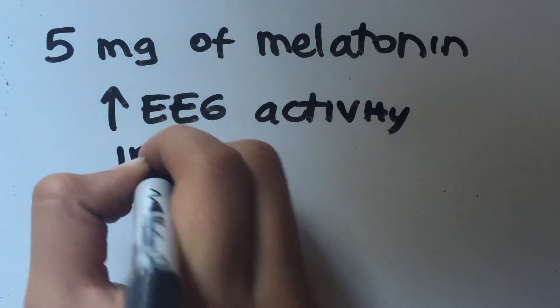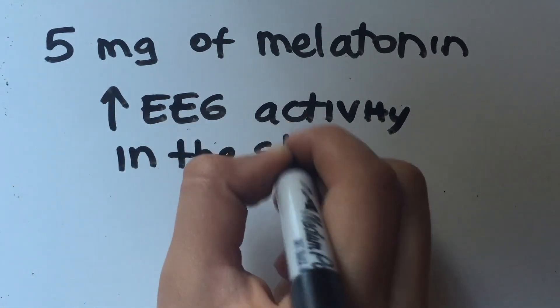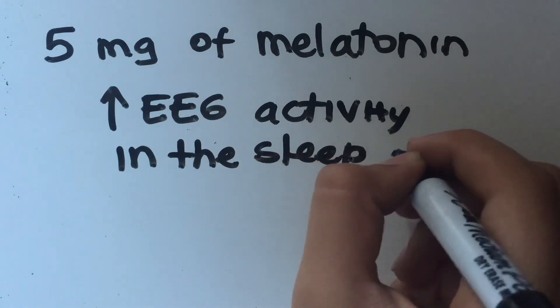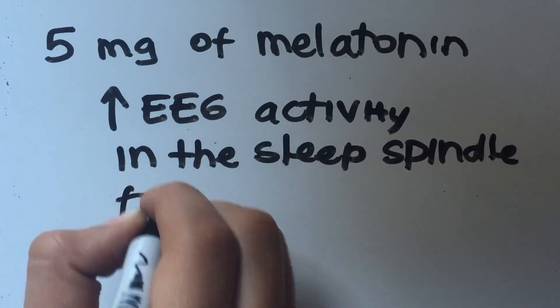Melatonin weakens the circadian signal from the suprachiasmatic nuclei, promoting heat loss, which induces sleepiness via the preoptic area of the anterior hypothalamus.